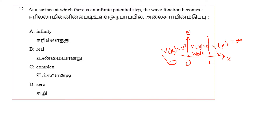The barrier outside a one-dimensional box has an infinitely large potential. Inside, V(x) is equal to zero — constant zero potential. Here at the infinite potential step, the wave function must become zero because no particle can penetrate an infinite barrier. So the answer is option D — zero.